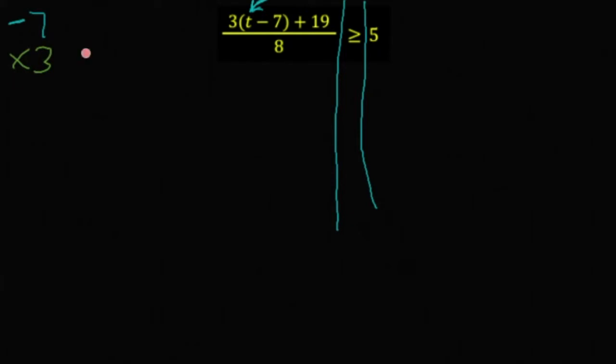Third thing that is done to the variable, we have 3 times all that, then plus 19. And lastly, we have, after we finish with the numerator, divide by 8. Those are the four things that are done to the variable.